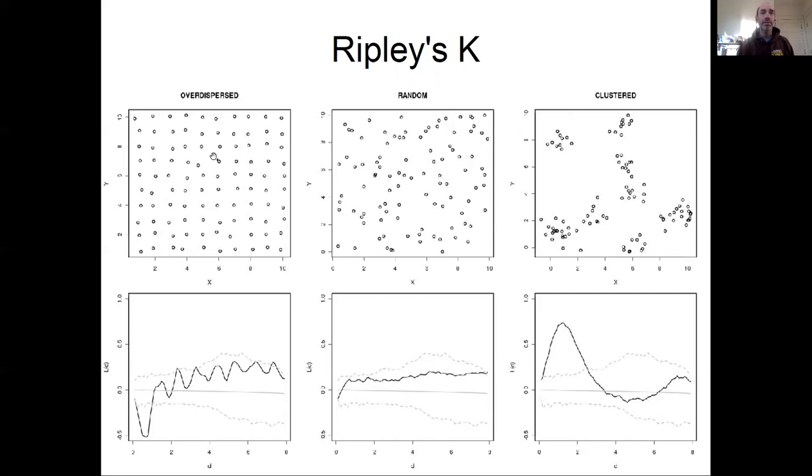If we look at the over dispersed, what we see is that this statistic is negative between the distance of zero and one. And that's indicating that between zero and one, I'm encountering less individuals than I would expect by chance, which is an indication of over dispersion. So we're over dispersed on the scale of between zero and one. And then after that, it's actually not that distinguishable from random, maybe a few little hints of peaks coming up.